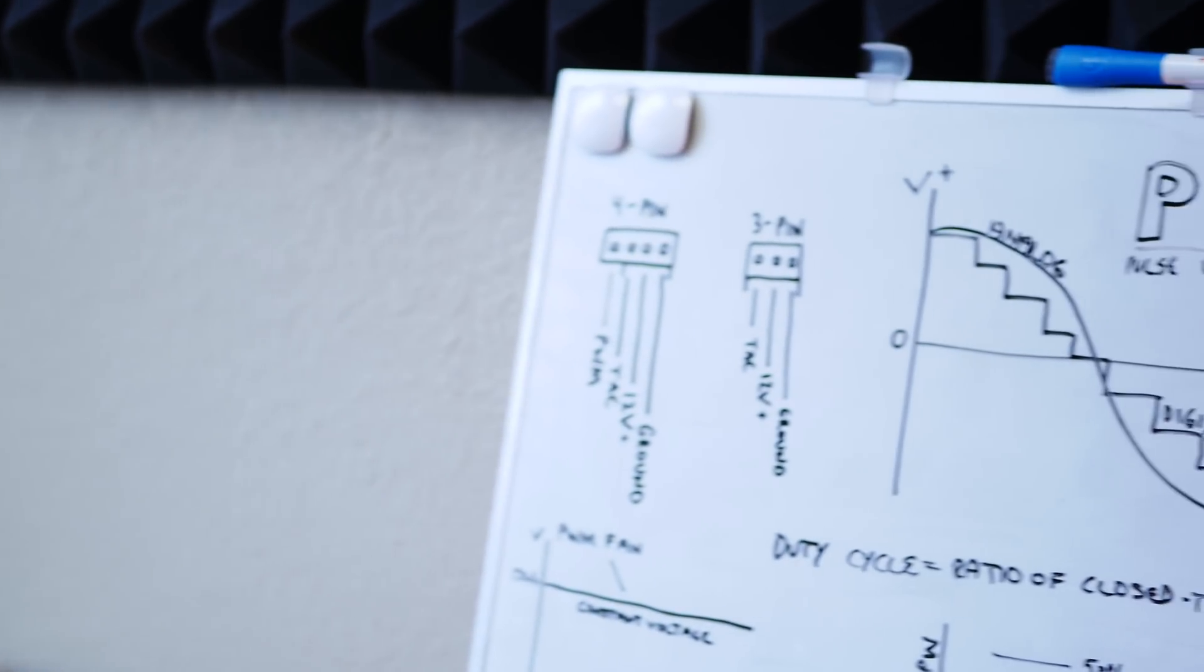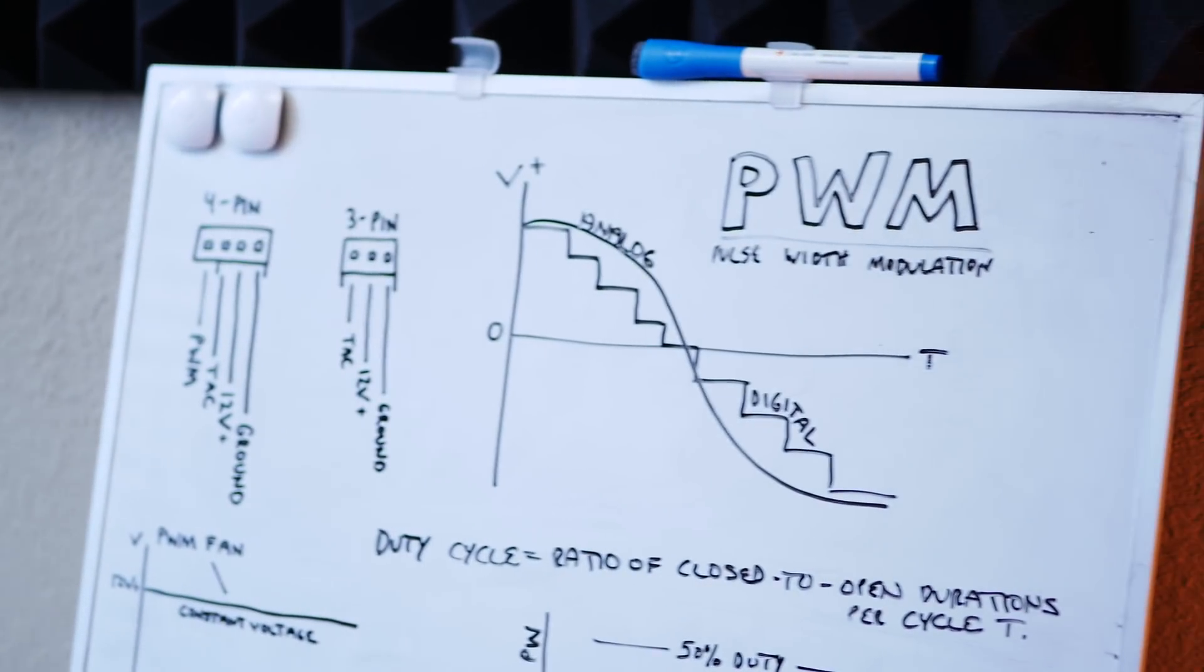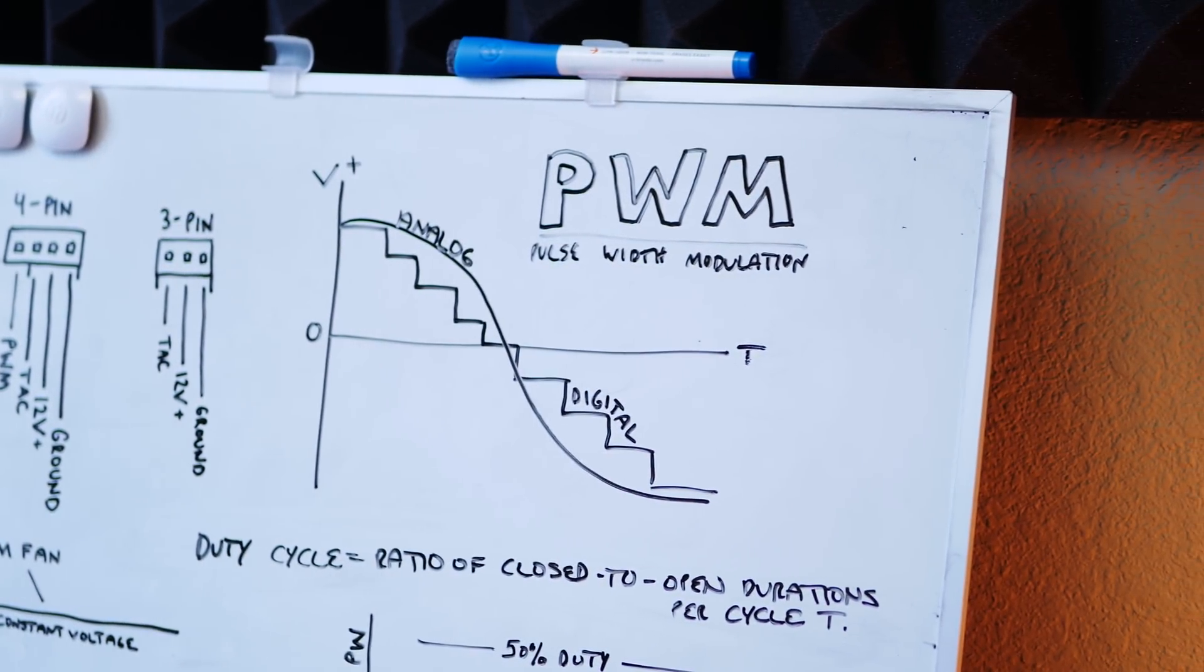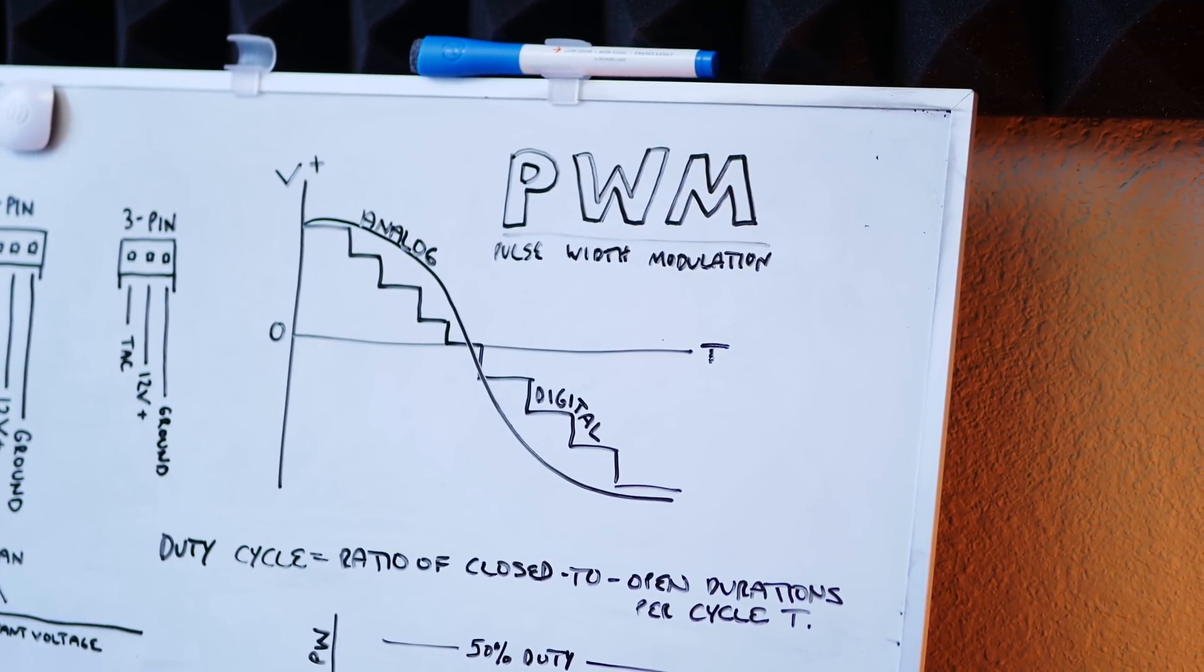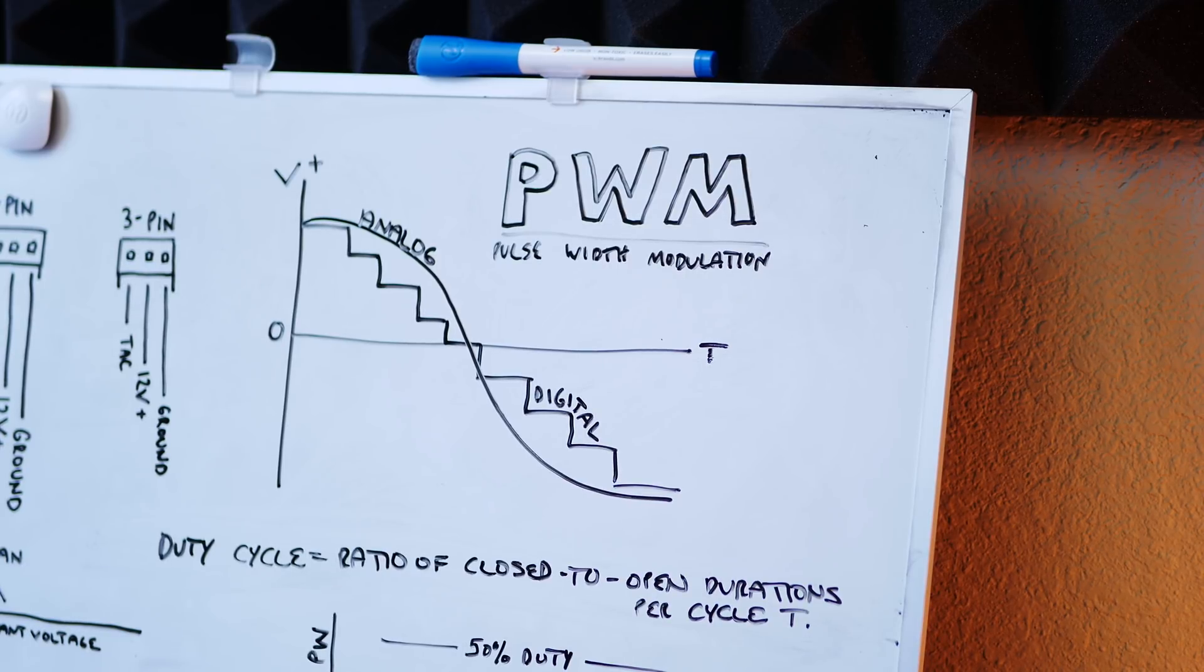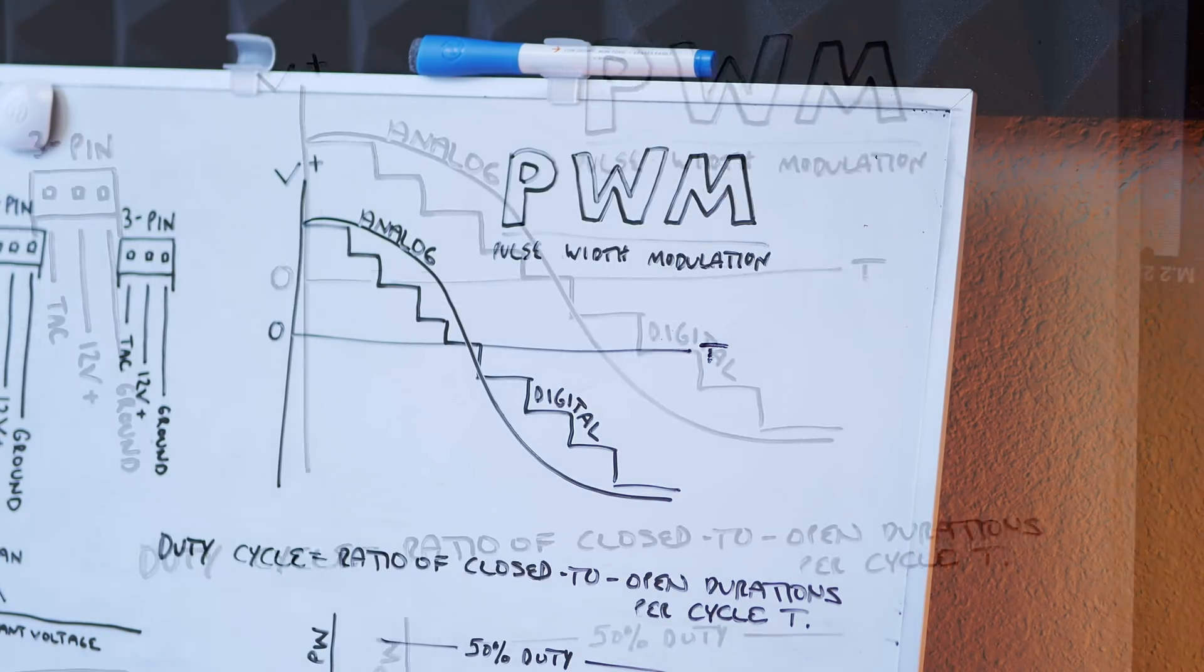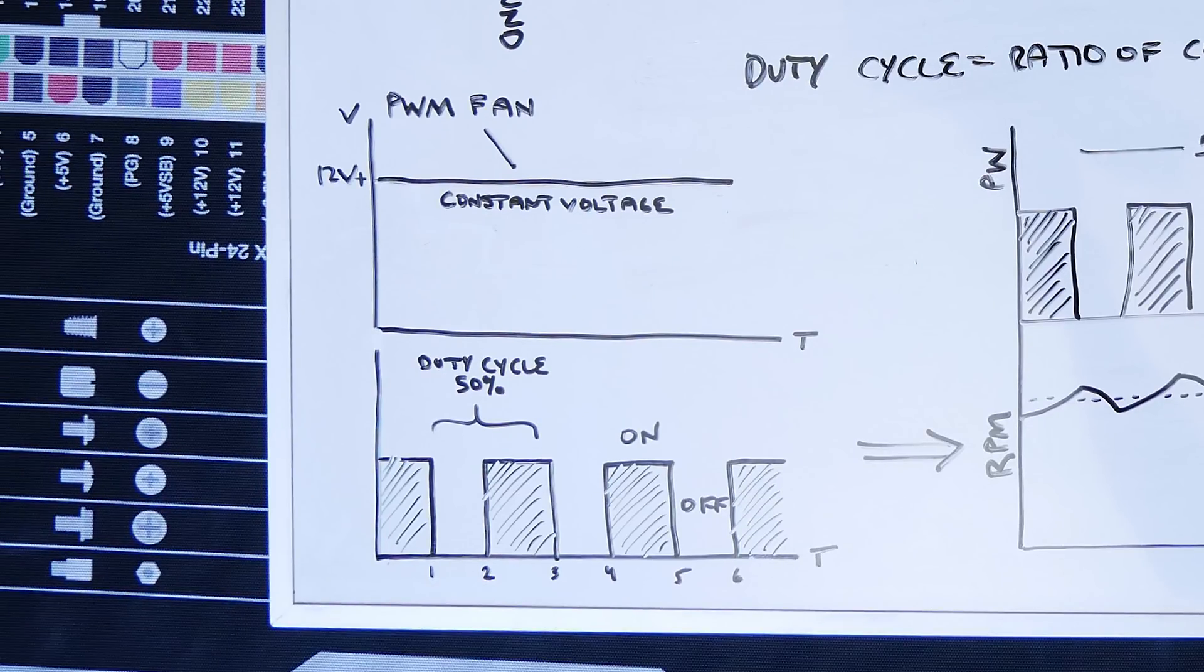In essence, Pulse Width Modulation is a method used for imitating analog wave patterns with a digital interface, and we can depict digital signals graphically with lines representing either on or off states. DC voltage is depicted as a straight line, and its y-intercept indicates the input voltage.